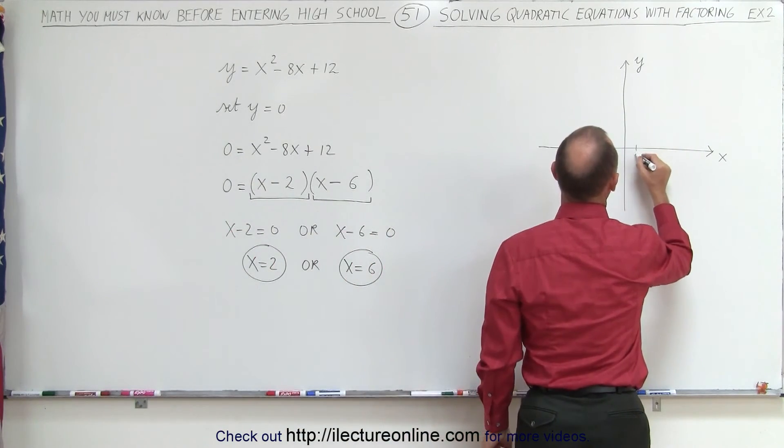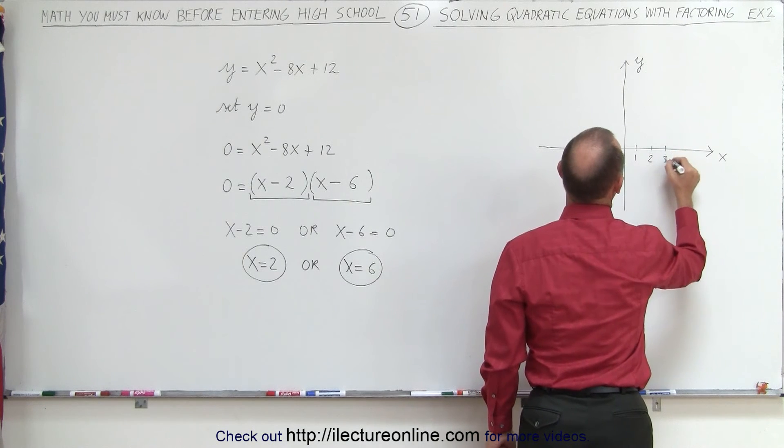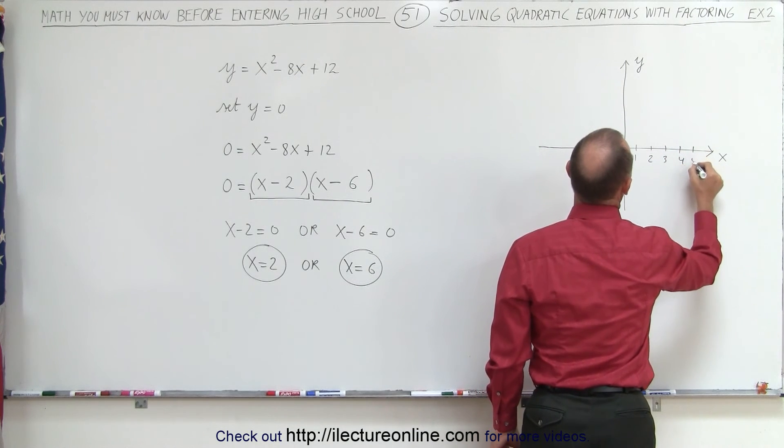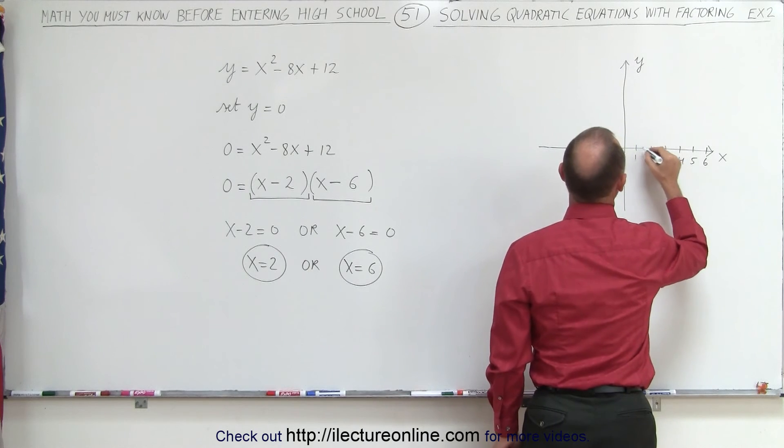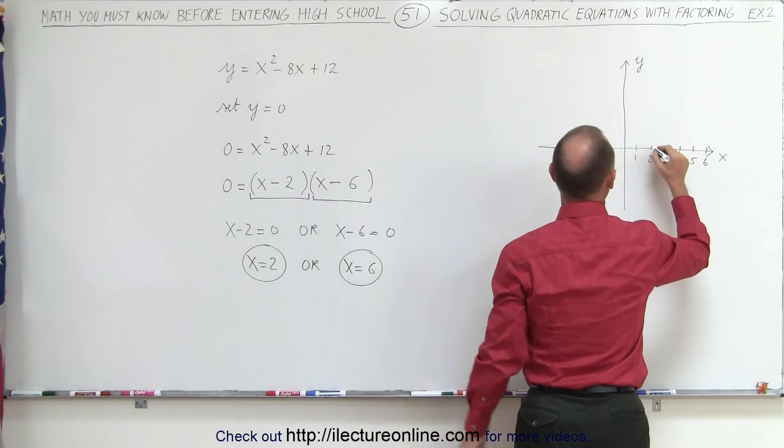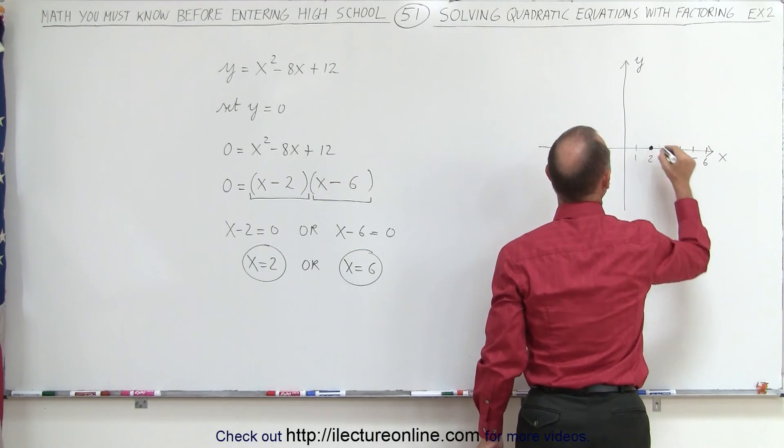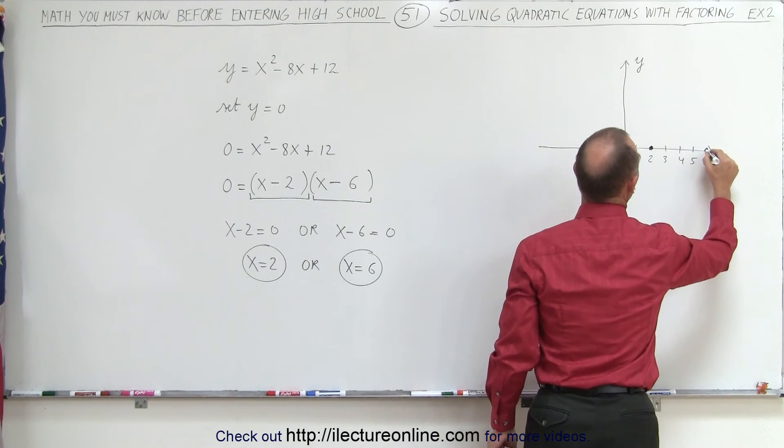So, let's find the number. So, this is 1, 2, 3, 4, 5, and 6. So, we know that the graph crosses at x equals 2, and it crosses again at x equals 6.